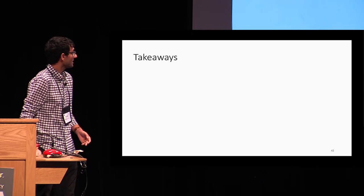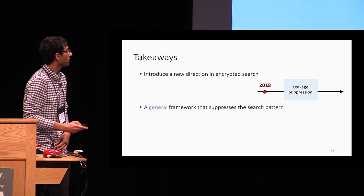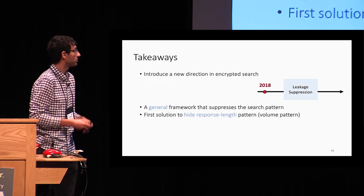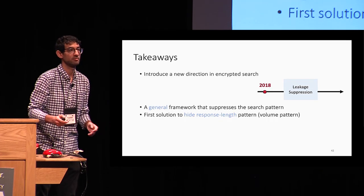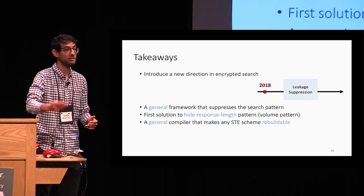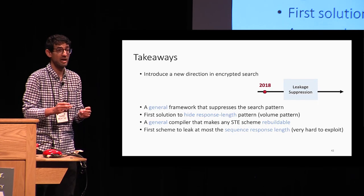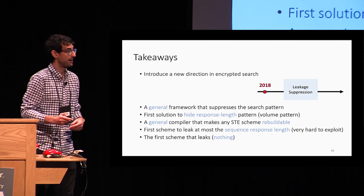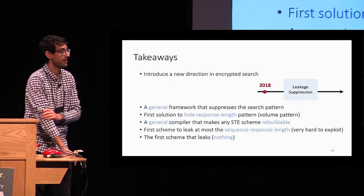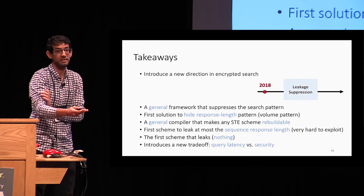To conclude, our takeaways: we introduced a new direction in encrypted search — leakage suppression. We introduced a general framework that suppresses the search pattern, i.e., query equality. We introduced the first solution that hides the response length, known as the volume pattern in the literature. We presented a general compiler, RBC, that makes any STE rebuildable — also of independent interest. We introduced the first scheme that leaks at most the sequence response length, a very small leakage that we believe is very hard to exploit. And the first scheme that leaks nothing, though it doesn't achieve perfect correctness — introducing an interesting new trade-off between query latency and security.